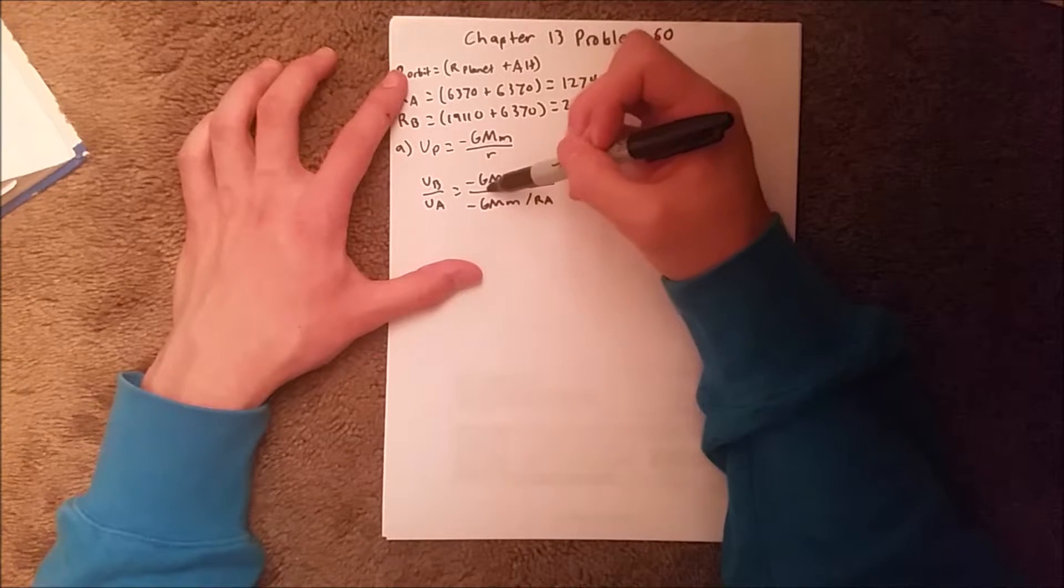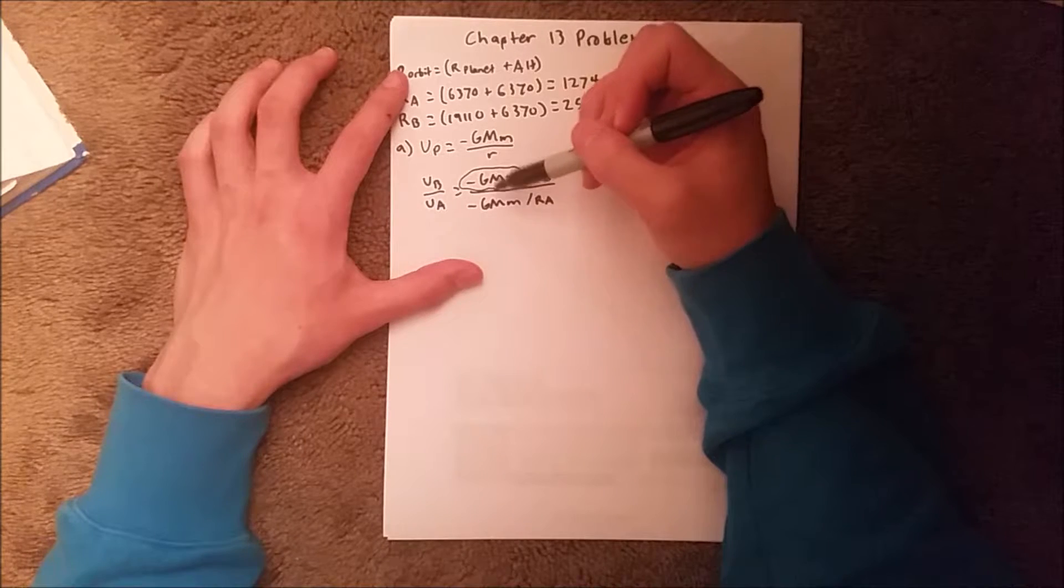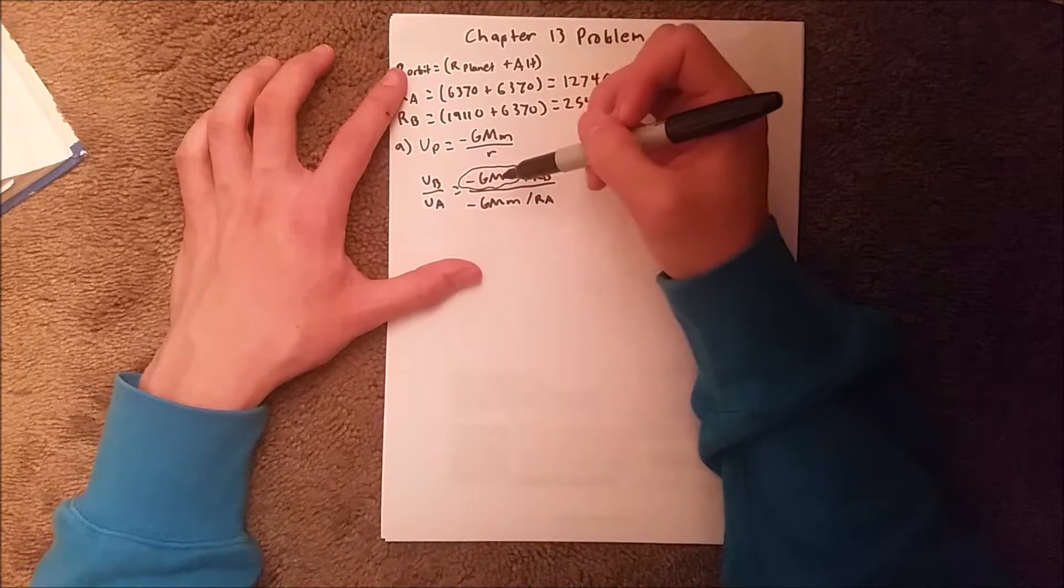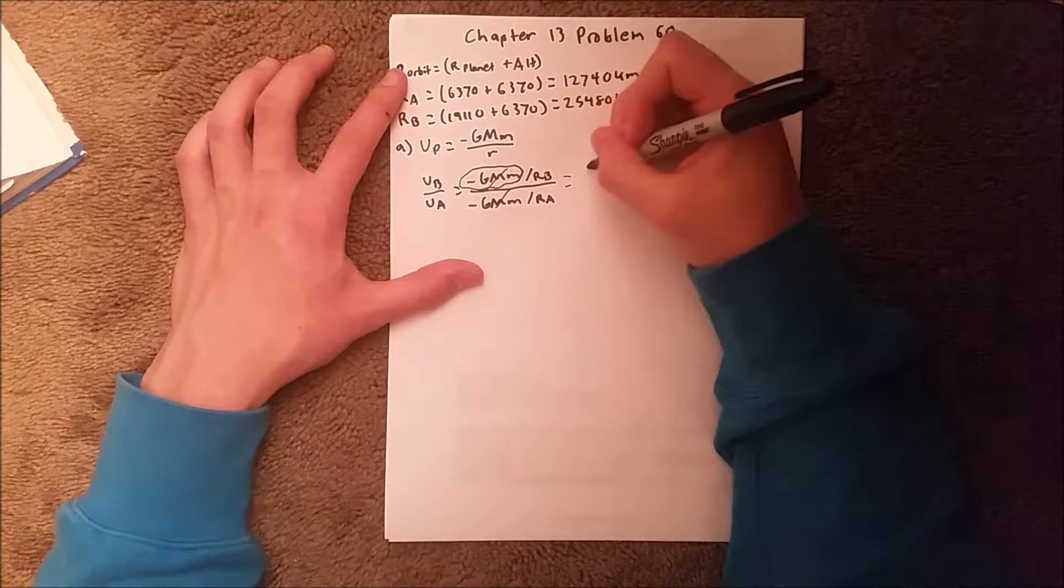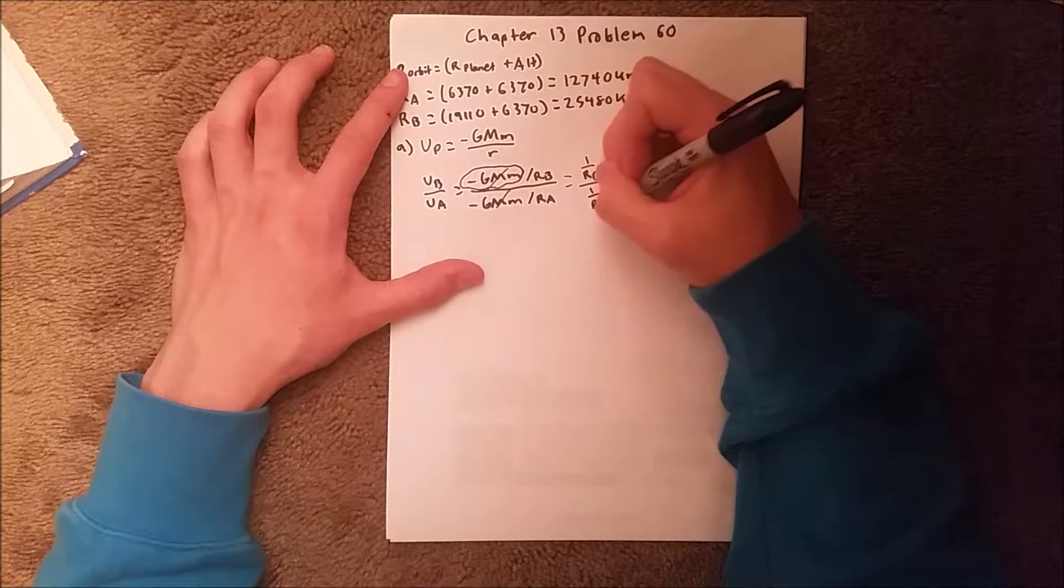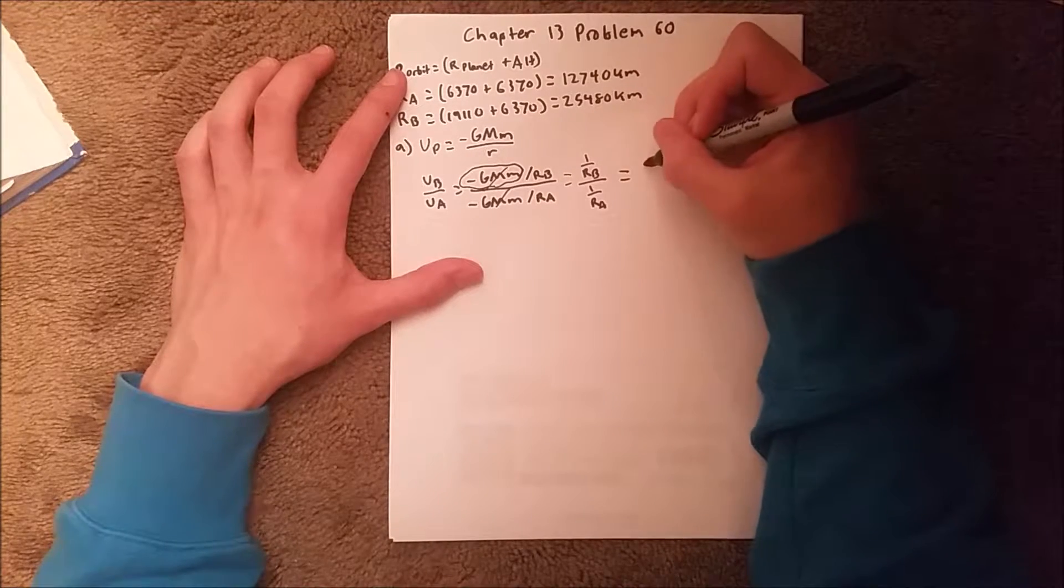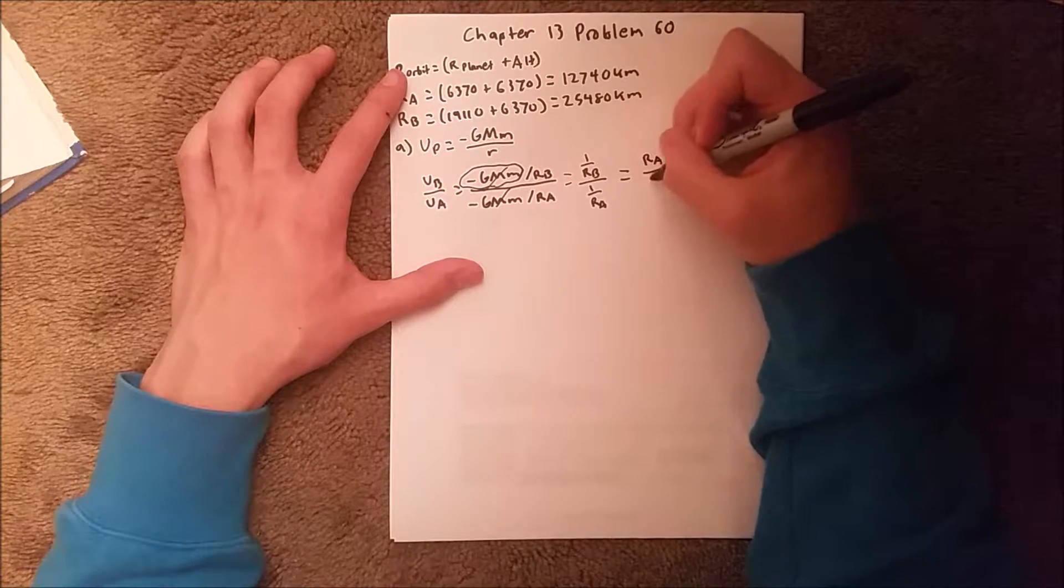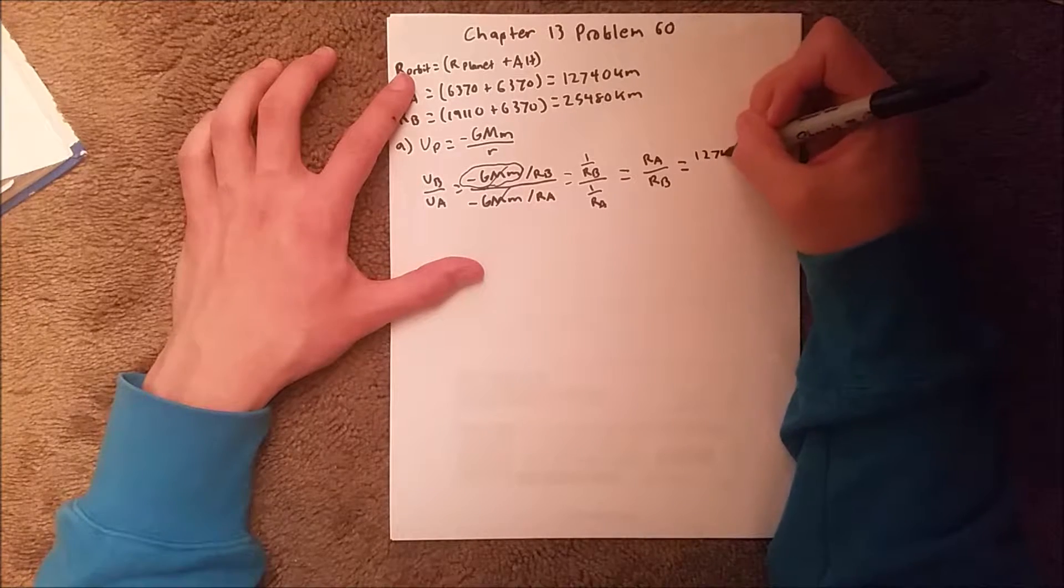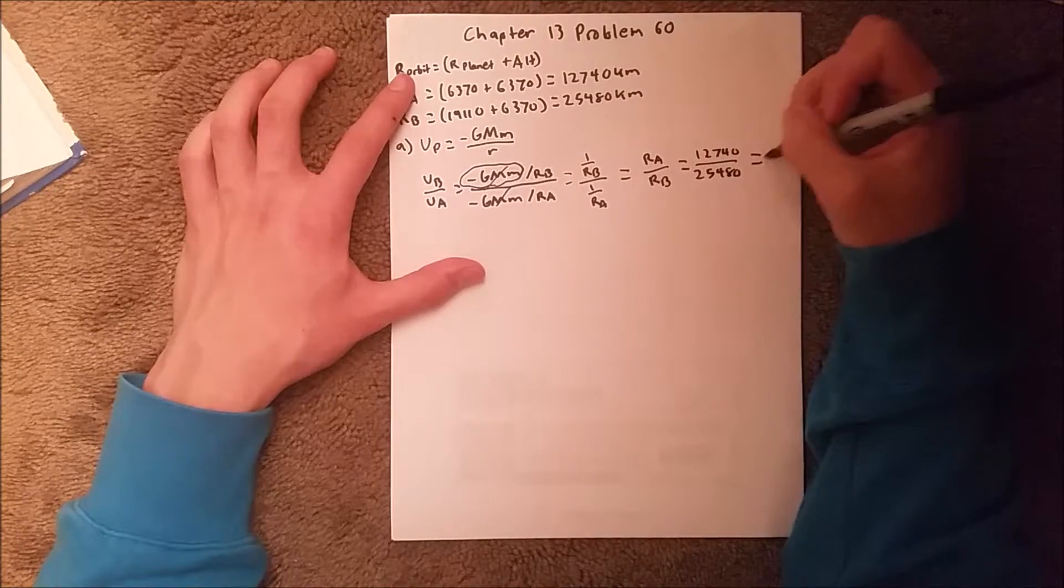And one thing we know is that this right here is actually the same for both, because G is a constant, M is the mass of the planet which they both orbit the same planet, and the M, we know the masses of the two satellites are the same. So we can actually cross these two out, and we are left with 1 over radius of B, over 1 over radius of A, which this is equal to radius of A over radius of B, which is 12,740 over 25,480, which happens to be 1 half.